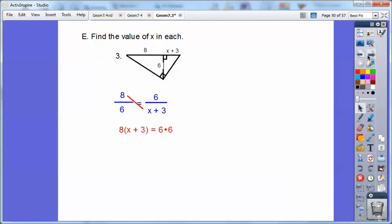8 times X plus 3 equals 6 times 6. Distribute the 8 through. 8X plus 24 equals 36. Subtract 24. Divide by 8. Sorry, it's kind of a mess right there. 8 over 8. And then 12 over 8 reduces to 3 over 2 because 4 goes into 12 3 times. 4 goes into 8 2 times. So you get X equals 3 halves.